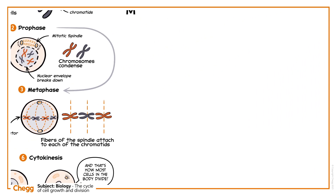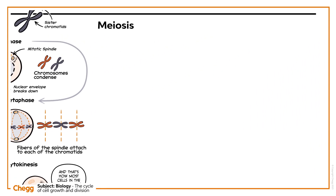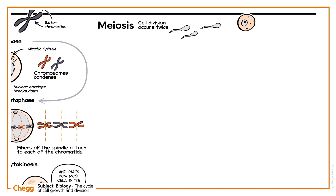Moving on to meiosis. Meiosis is the type of cell division that produces egg and sperm cells. Cell division occurs twice during meiosis: Meiosis I, in which chromosome pairs separate, and Meiosis II, in which sister chromatids separate.